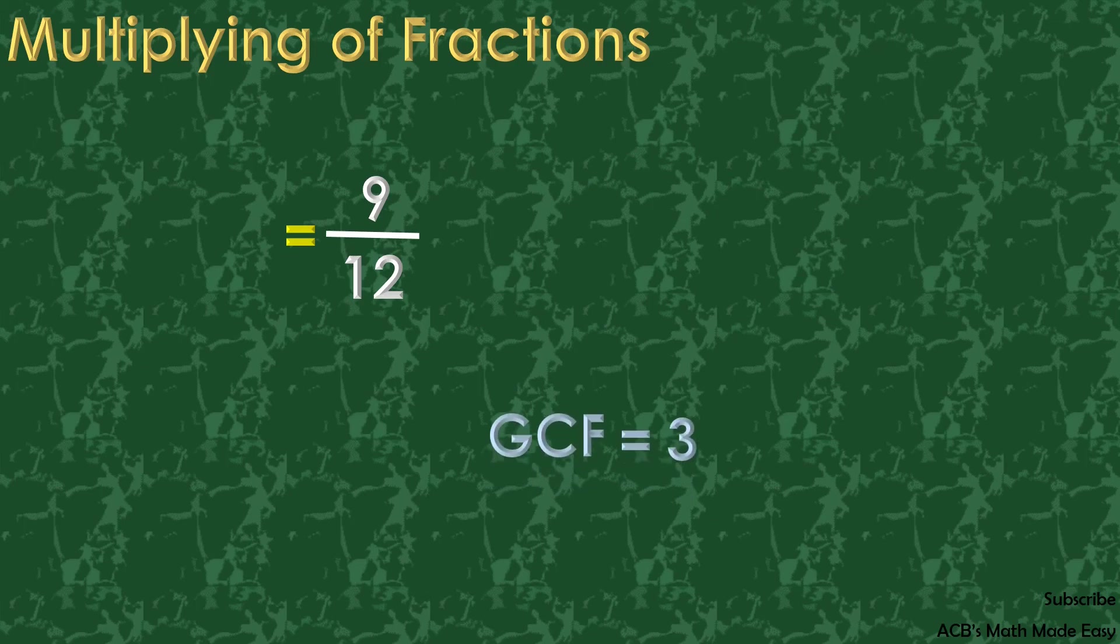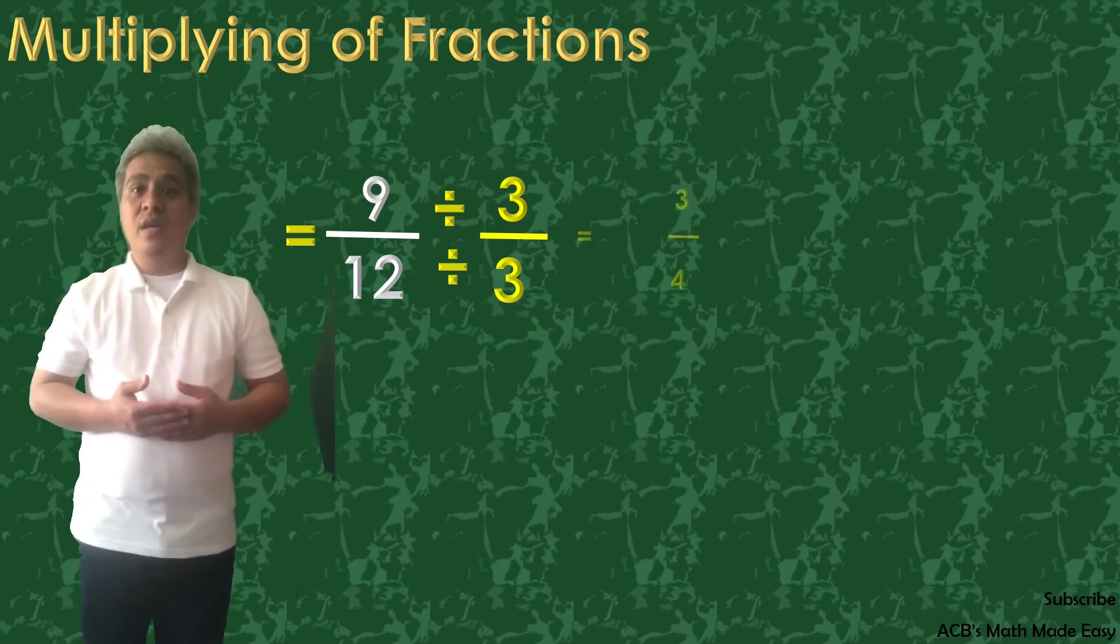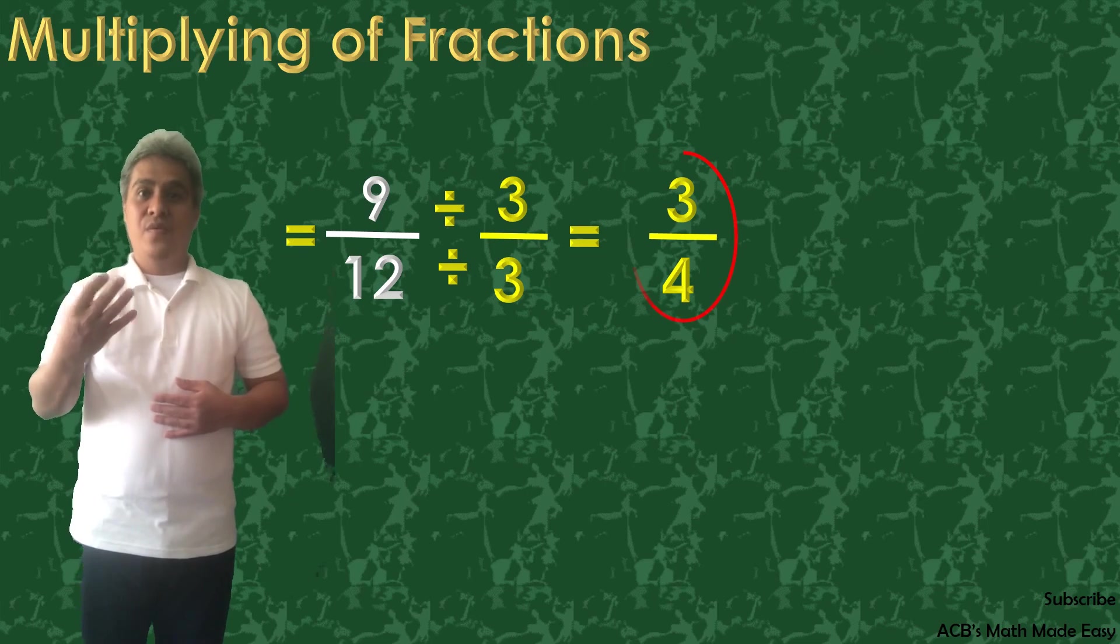Greatest common factor of 9 and 12 is 3. Divide them by the GCF 3, and our final answer is 3 fourths.